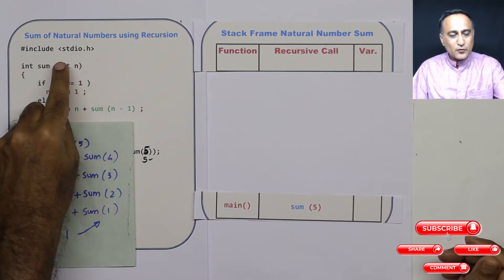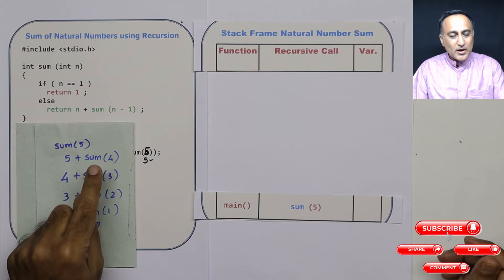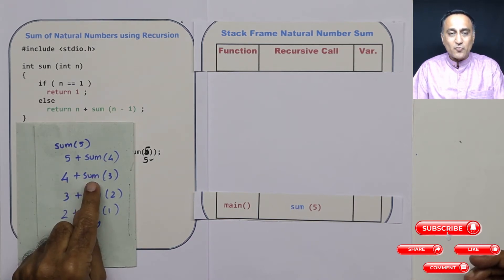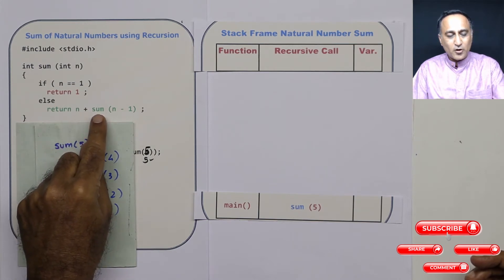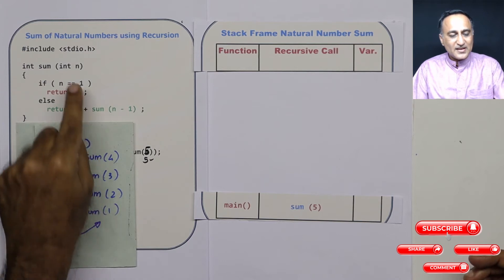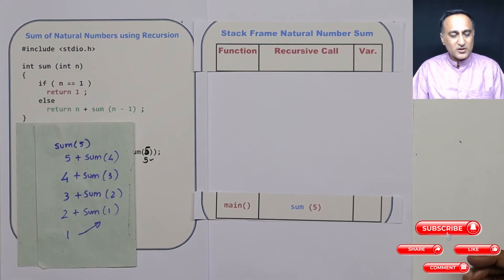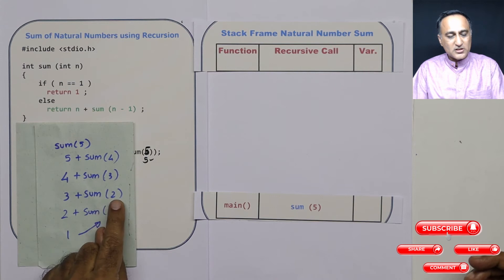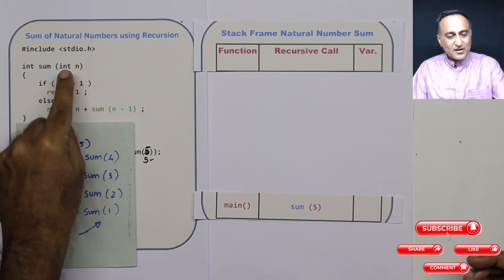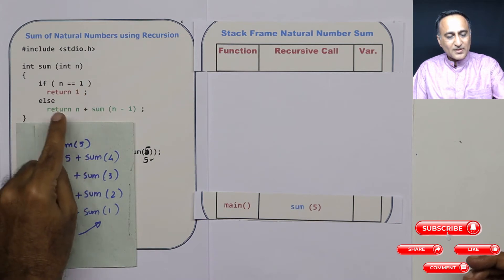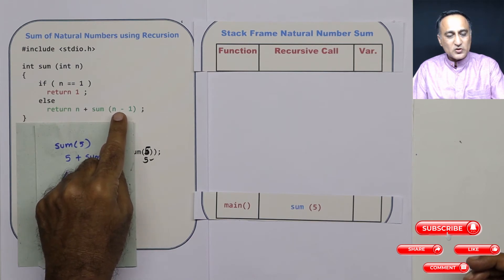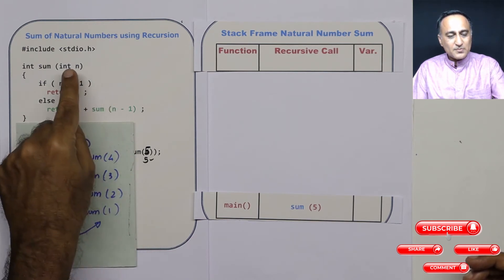Then next time n is 4, which is again not equal to 1. So I do not know the sum of numbers 1 to 4, but I know it is 4 plus sum of all numbers from 1 to 3. Then n is 3, 3 equal to 1 is false. Sum of 3 is 3 plus sum of all numbers from 1 to 2. So I call sum of 2. Again 2 is passed, 2 equal to 1 is false. Sum of 2 is 2 plus sum of 2 minus 1, which is 1. Now n becomes 1.